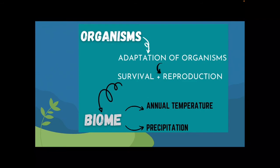When we study ecology at the organism level, we are actually studying the adaptation of the organism. Adaptation means survival plus reproduction — not just mere survival, but the organism must be able to survive and produce its own offspring in a good manner in that environment. That is organism-level ecology.